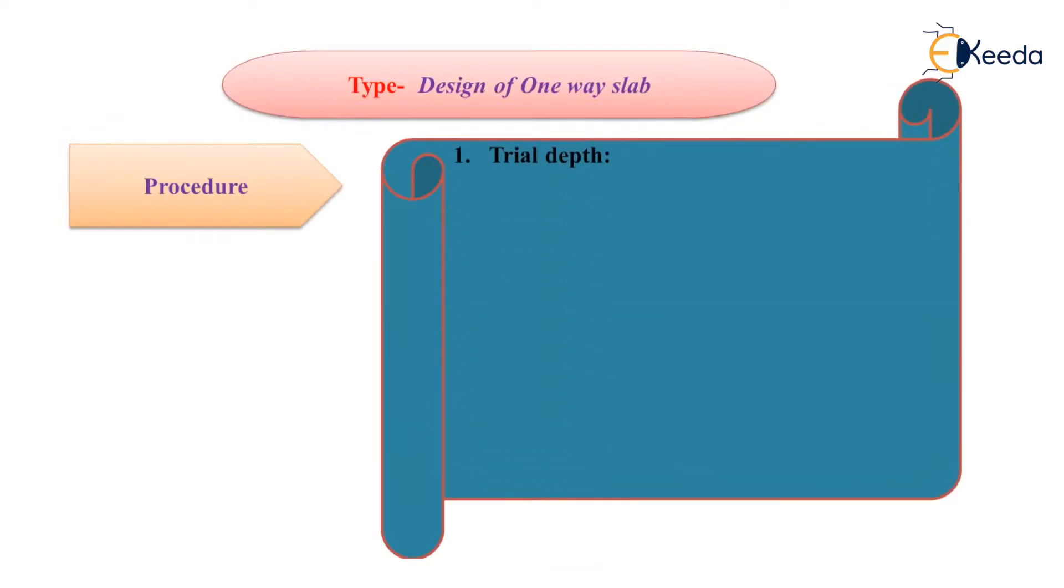First step is trial depth. As we know that L by D ratio for simply supported member is 20. For cantilever, it is 7, and for continuous, it is 26.